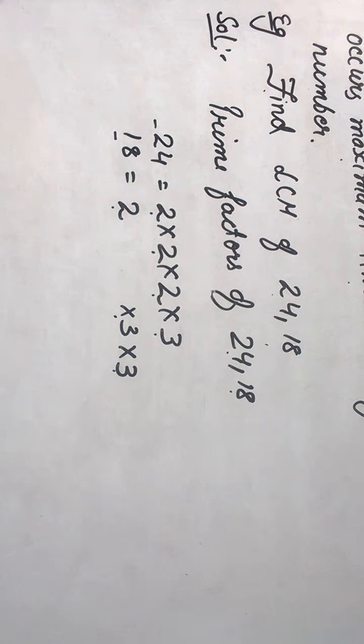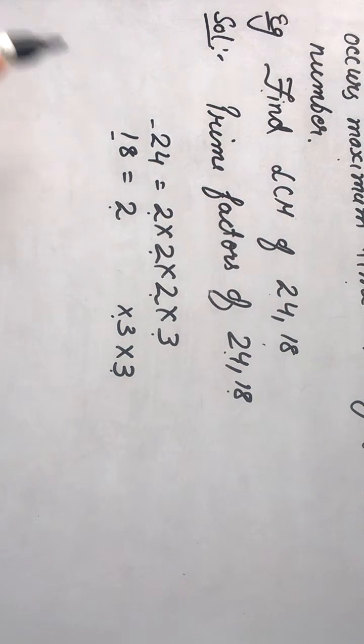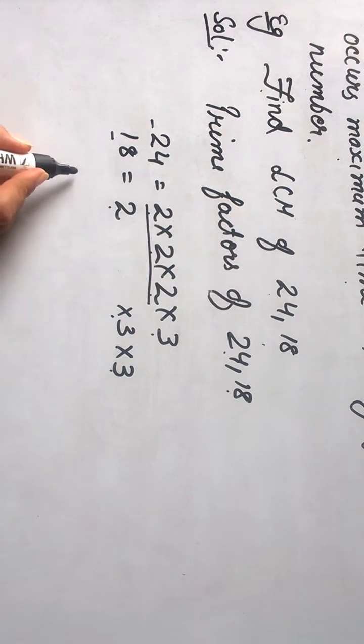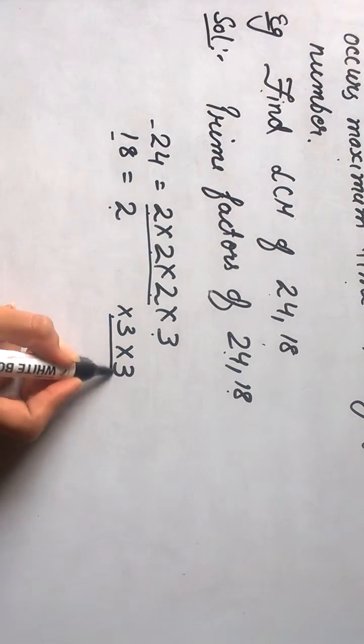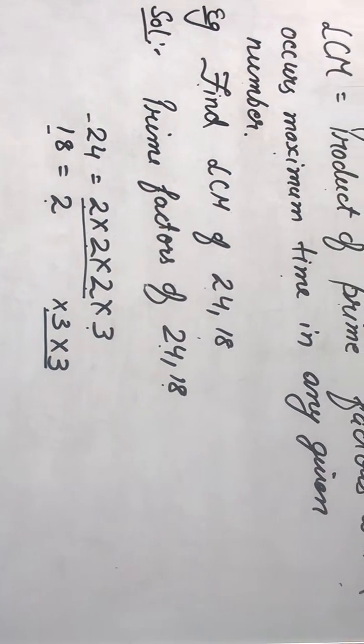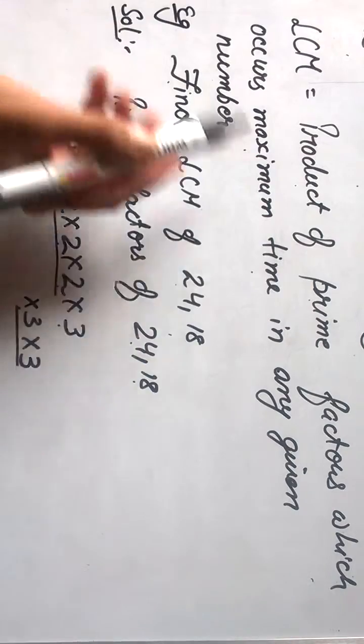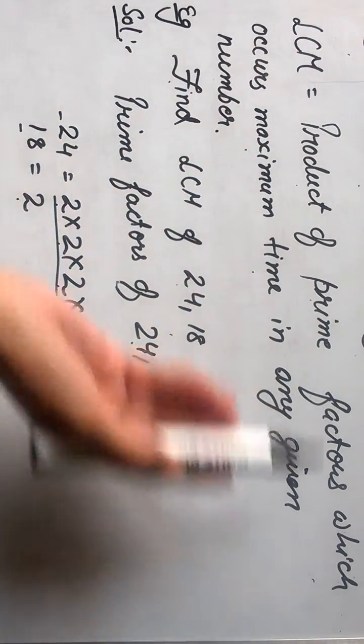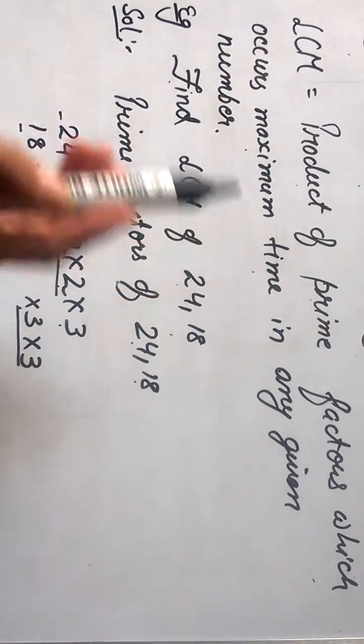So here we can see that 2 occurs for 3 times and 3 occurs for 2 times. And as we told above, LCM is the product of prime factors which occurs maximum time in any given number.